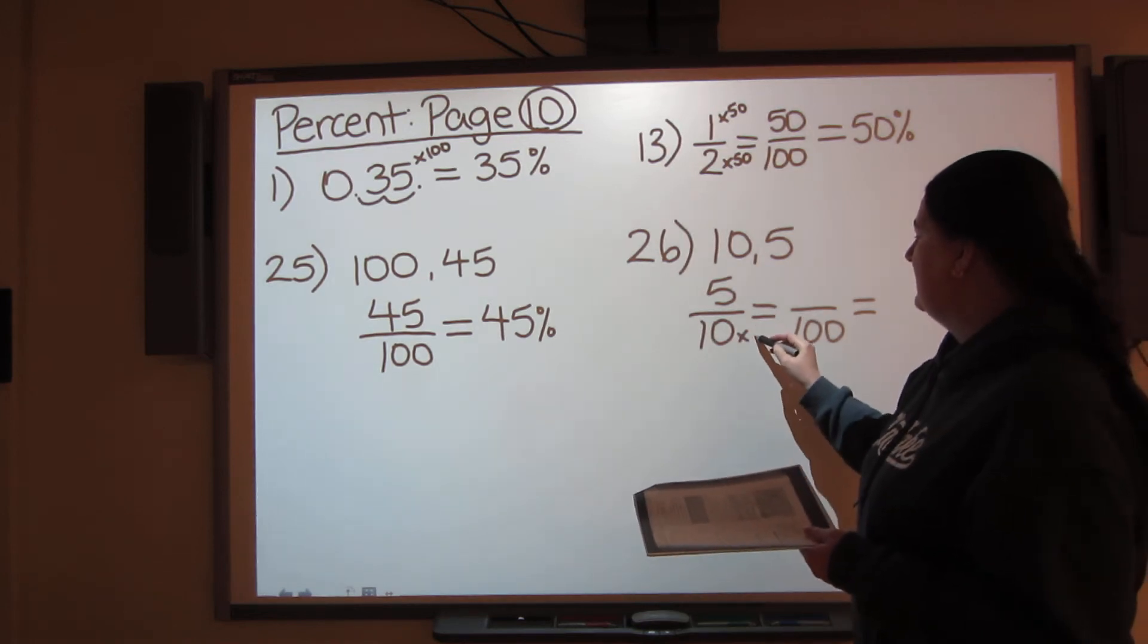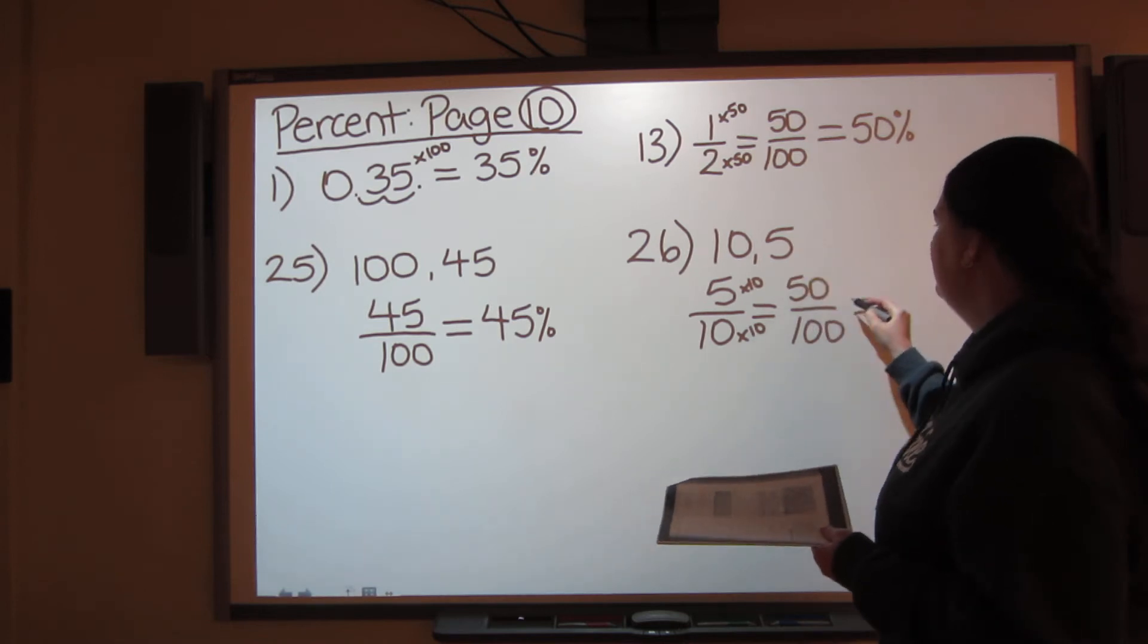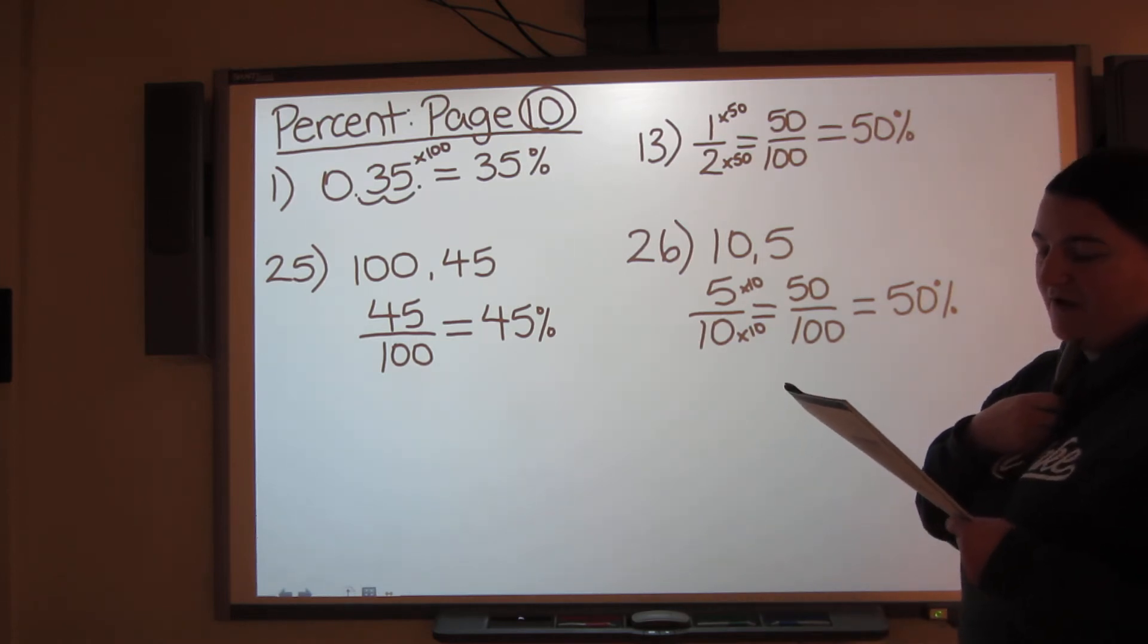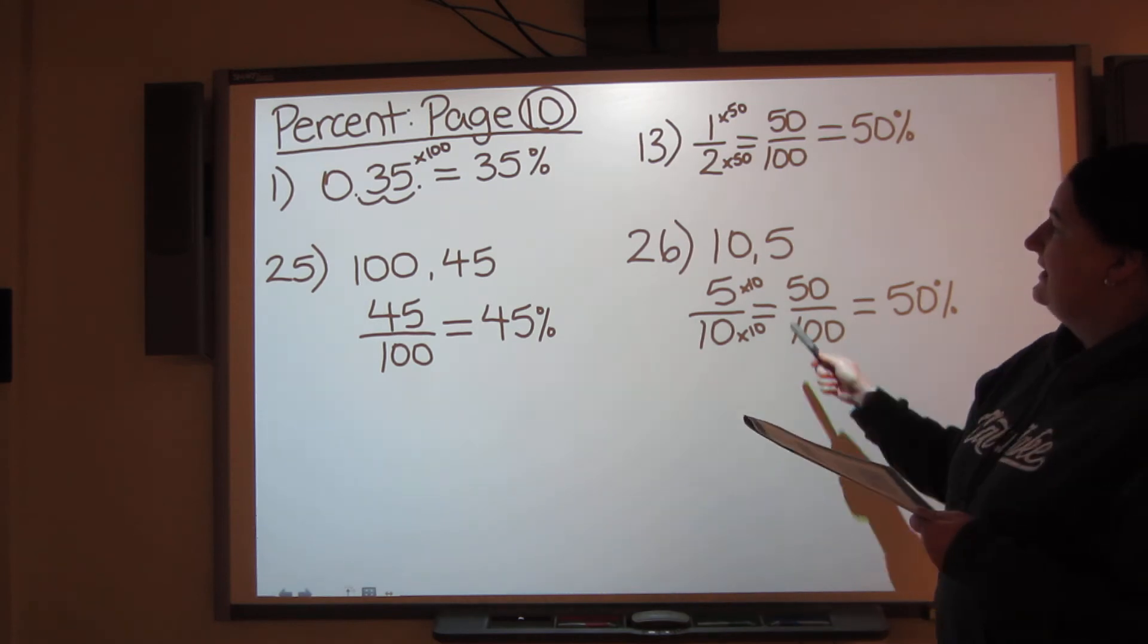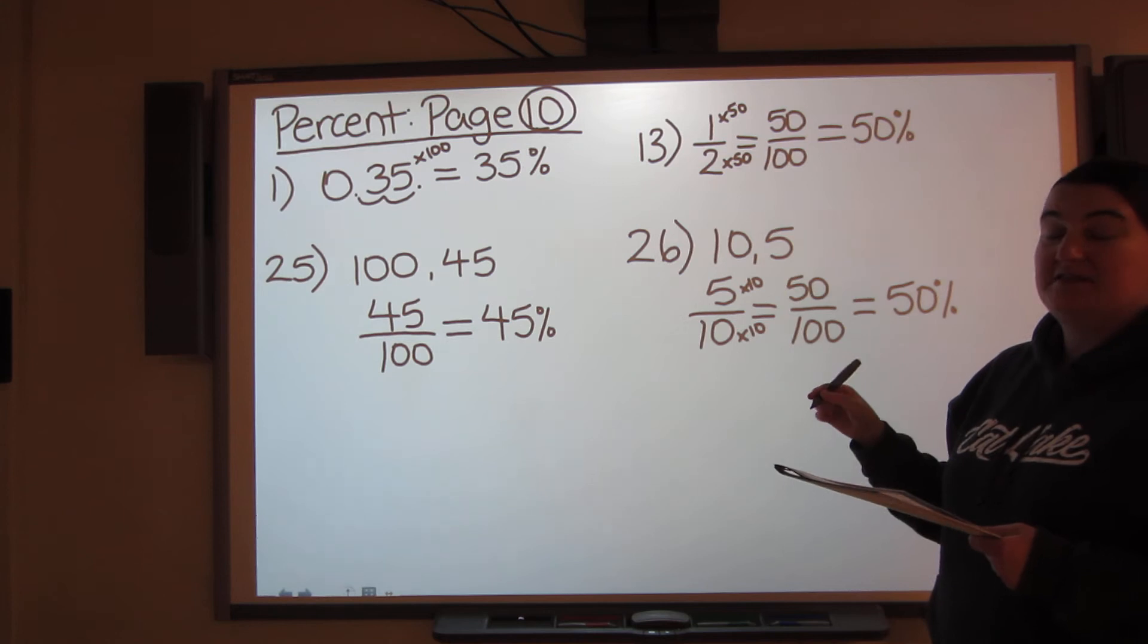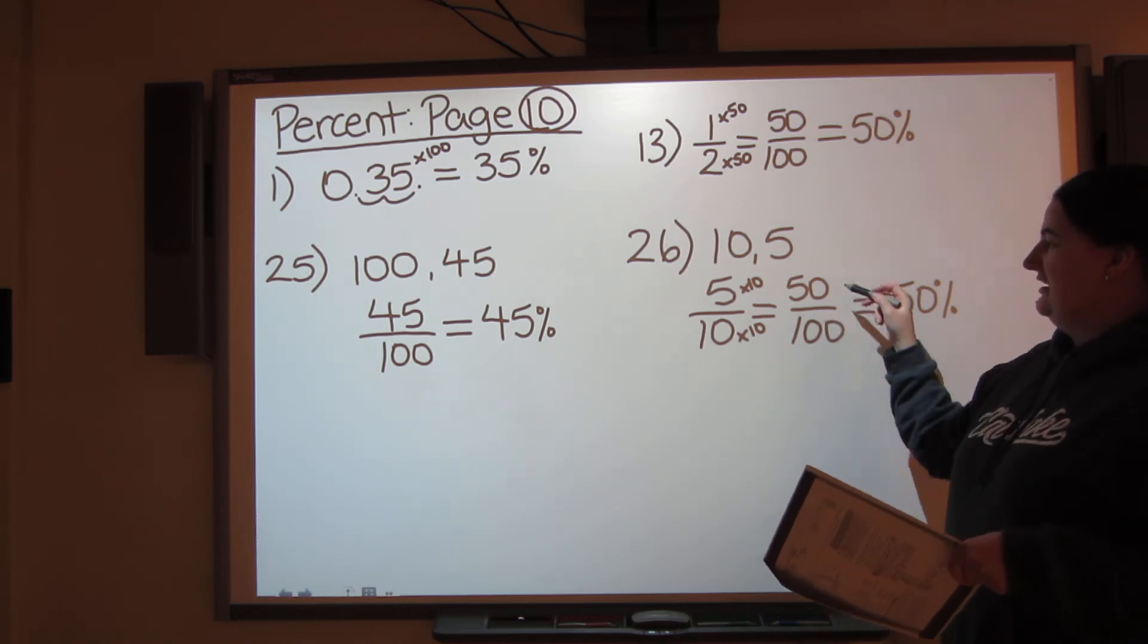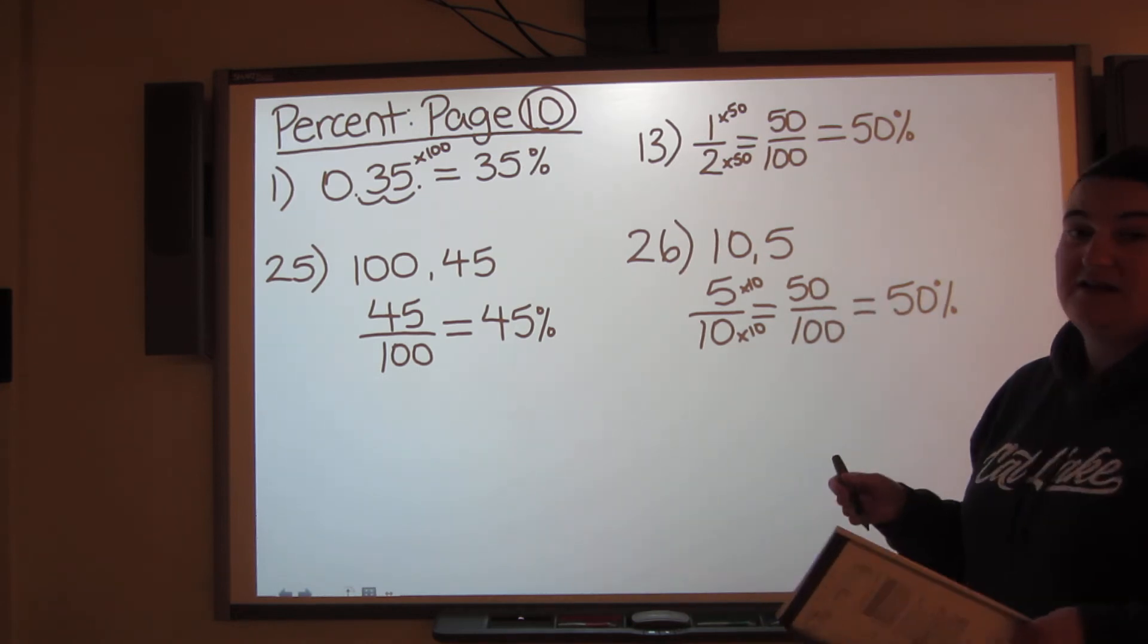10 times 10, 5 times 10, 50, 50%. All of those ones, number 25 all the way to number 30, you can do like this. Take the number, put it on the bottom, take that number, put it on the top. There's your fraction or the mark that you got on your quiz. And then change it into an equivalent fraction with 100 on the bottom and there's your percentage, no problem.